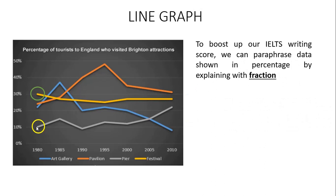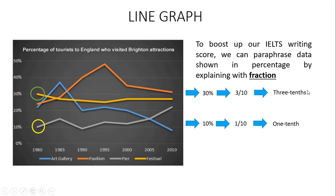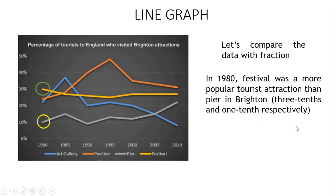To boost our IELTS Writing Score, we can paraphrase the data by explaining with fractions. 10% has the same meaning as 1 per 10, or 1 tenth. 30% has the same meaning as 3 per 10, or 3 tenths. Note: if the number is 2, 3, or more, we add an 'S' — but for 1, there is no S. So, comparing the data with fractions, we can say: in 1980, festival was a more popular tourist attraction than pier in Bratton — 3 tenths and 1 tenth respectively.